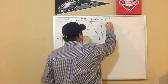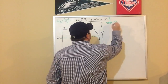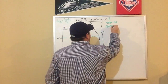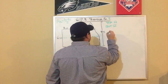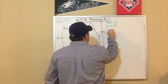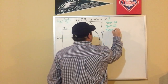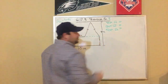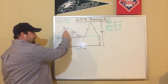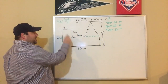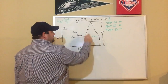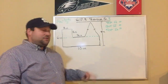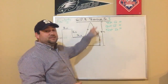I'm going to label them: top rectangle, bottom rectangle, and top triangle. I've got three different areas to find. If I can find those three areas, I can add them together and that'll give me the area of the whole figure.